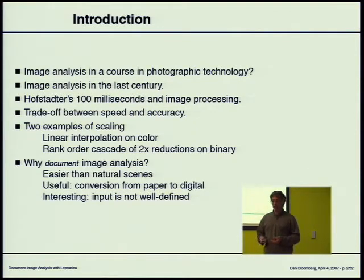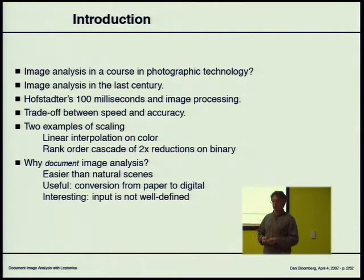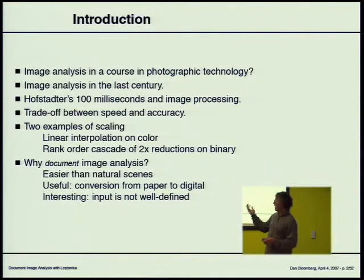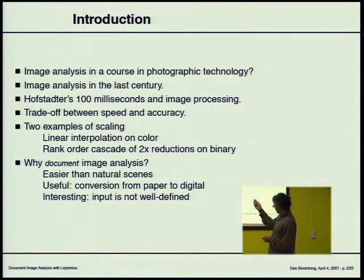There's always a tradeoff between speed and accuracy. It turns out that for image analysis you can have both — you can do some things very quickly and get good results. Because in image analysis you have to make decisions about pixels, and that's a non-linear process. For example, in image processing you can do linear interpolation for scaling, but for image analysis you're very often working on binary images and want to do something very crude and very fast. A rank order cascade of power-of-two reductions is actually very useful for doing such things.